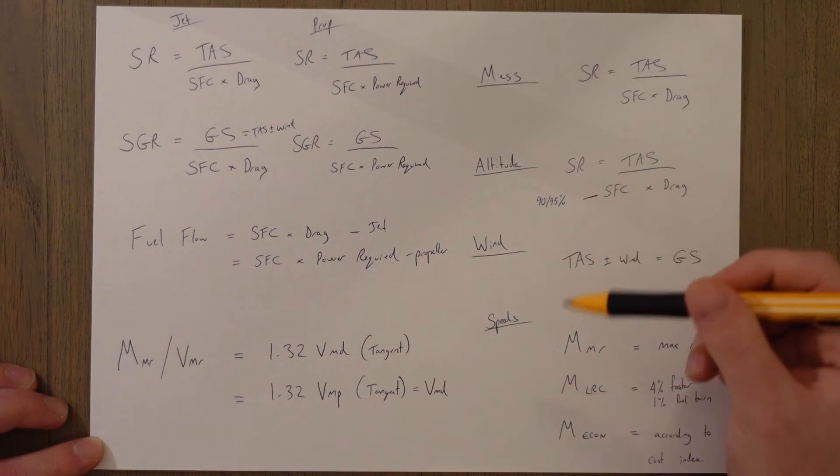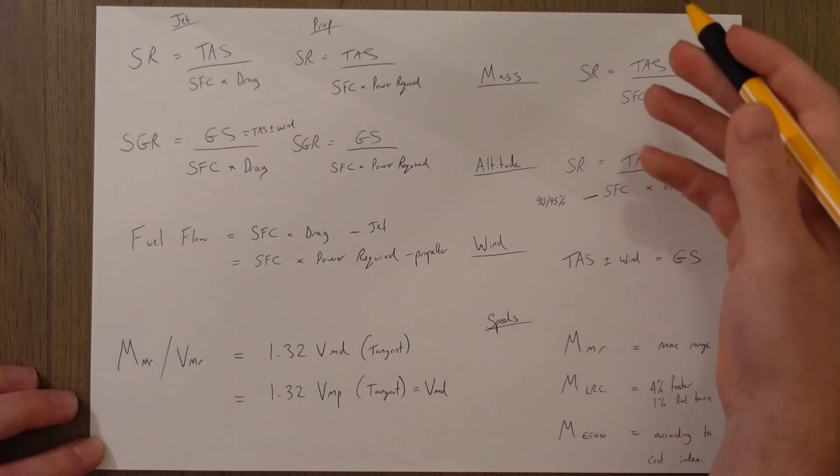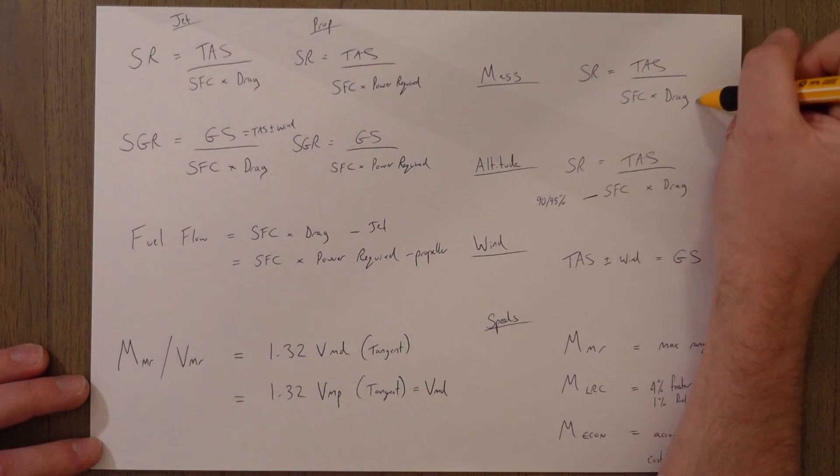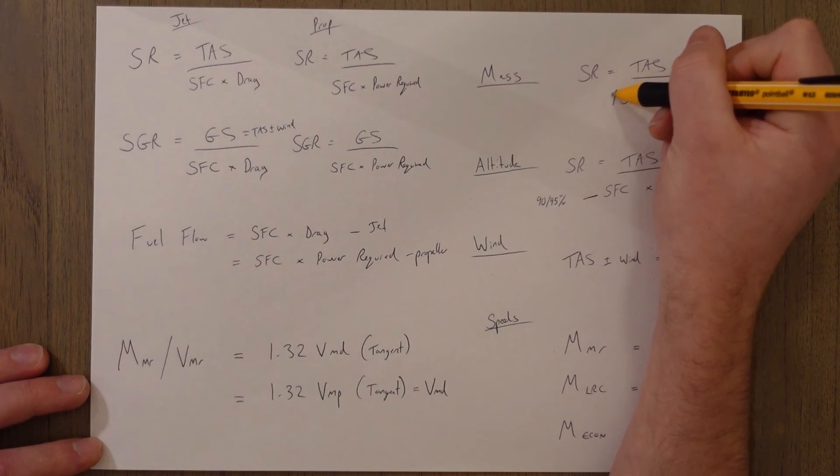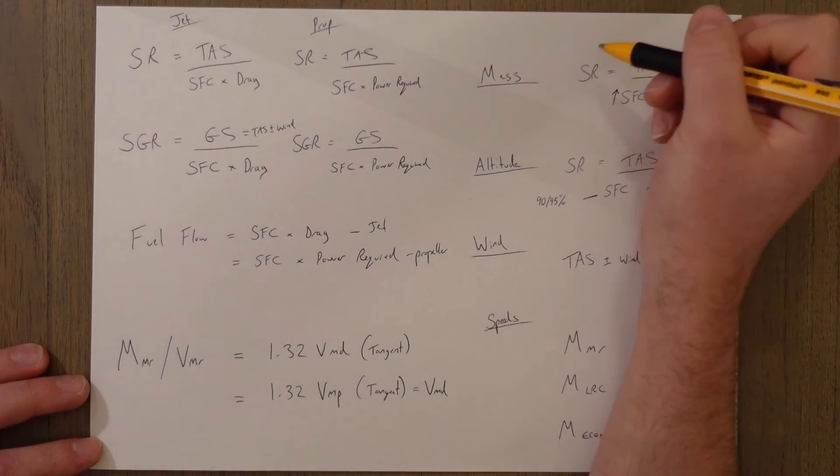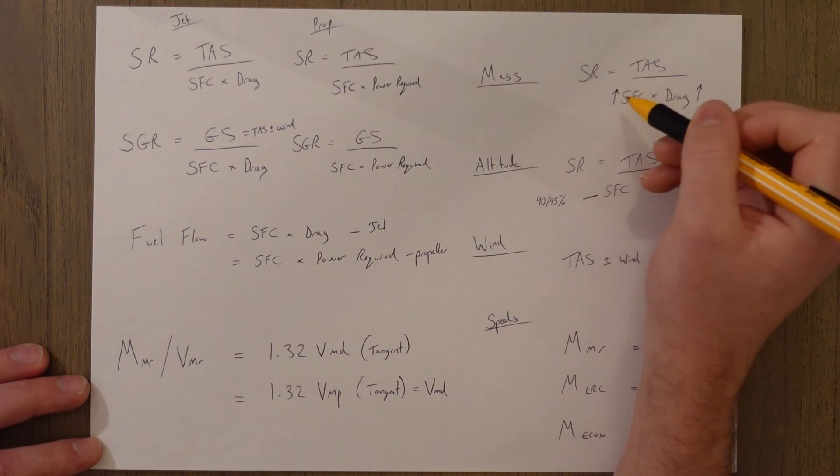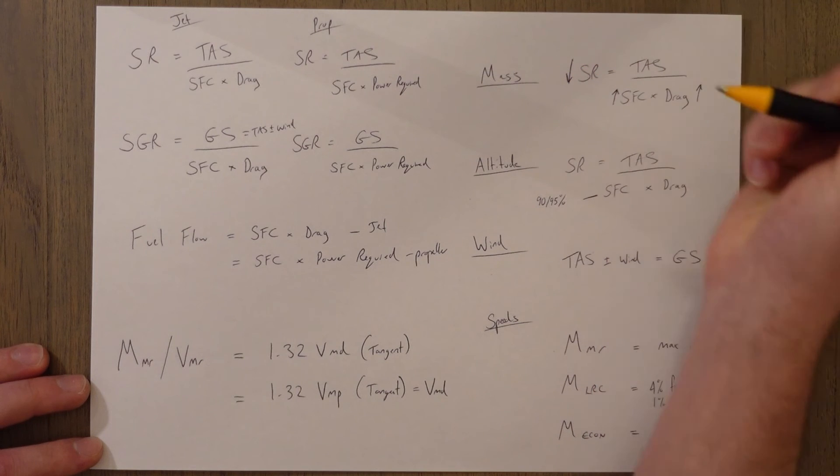So things that influence our level of range - our specific air range, for example, is influenced by mass. If we have more mass, it means we have more drag, and when you have more drag, we need more thrust, which means our specific fuel consumption goes up. Well, that means that our specific fuel consumption doesn't go up; we just need more thrust, but anyway has the same effect of reducing our range.